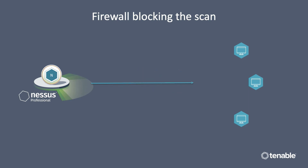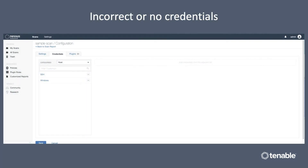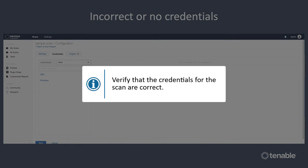Ensure that there is nothing in between the scanner and the targets that may affect the scan results. When your results are incomplete for the target you're scanning, this may be because your credentials for the scan are incorrect or not present. Verify this in the credentials section in the configuration for your scan.